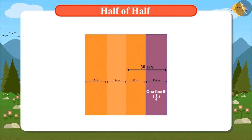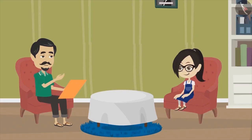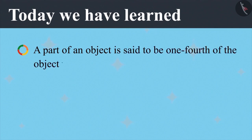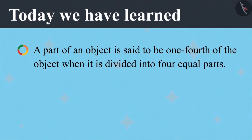Now, this paper is divided into four equal parts and each part is one-fourth part of the whole paper. Yes, Vandana. Today, we have learned a part of an object is said to be one-fourth of the object when it is divided into four equal parts.